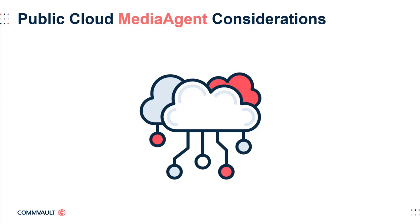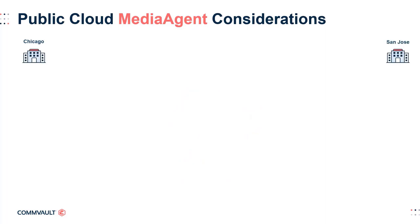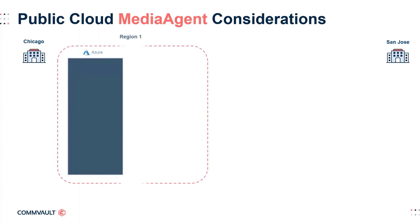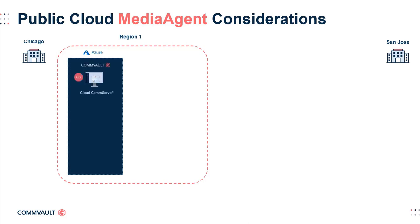Let's take a look at an optimal design for a customer using Azure. In our prior example, both Chicago and San Jose are kept in separate Azure regions. Chicago's data is all squared away in its respective region, while San Jose is in its own region. Data may be commonly segregated this way to maximize operations. With Chicago being the main production center, the CommServe will be located in that region along with a lightweight software package called Cloud Controller.